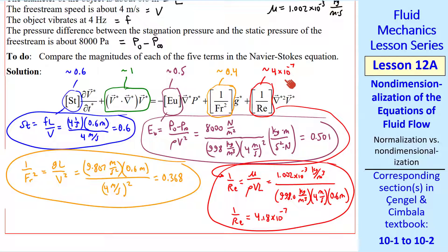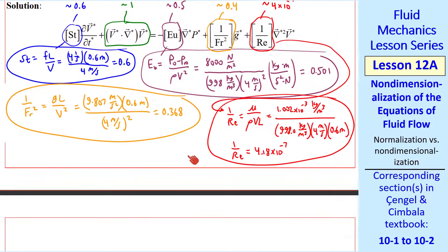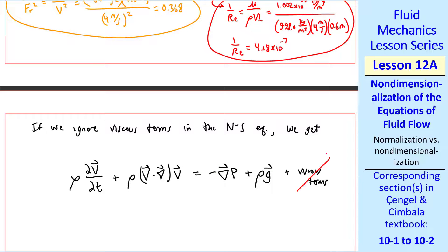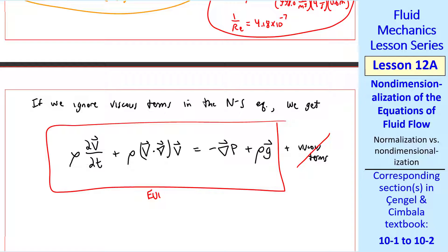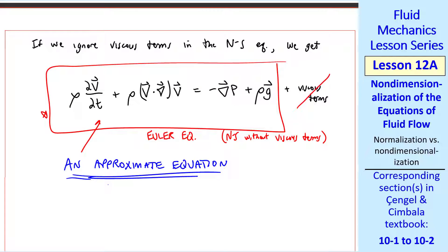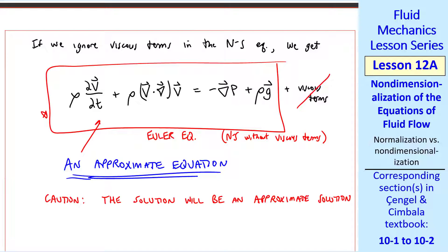Clearly, in this problem, the viscous term is negligibly small compared to any of the other terms. None of the other terms can be neglected compared to the order-of-magnitude-1 inertial term, but the viscous term is certainly negligible. If we ignore the viscous terms in the Navier-Stokes equation, we get the Euler equation — the Navier-Stokes equation without the viscous terms. This is an approximate equation which we can use to solve this problem, and it is easier to solve than the full Navier-Stokes equation.